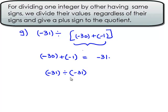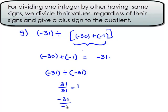When we divide two integers, first we divide their values regardless of their signs. That is 31 divided by 31 gives 1. When we divide two integers having similar signs, we always obtain a positive sign in the answer, which implies negative 31 divided by negative 31 equals plus 1. Therefore, the answer is plus 1.